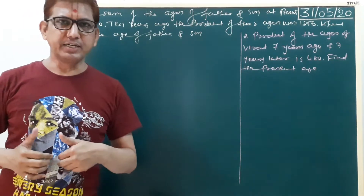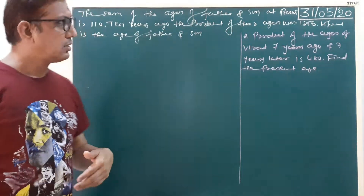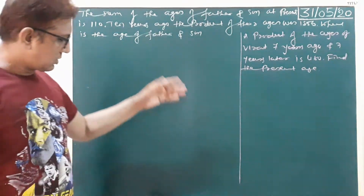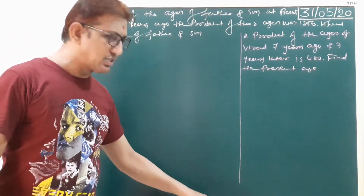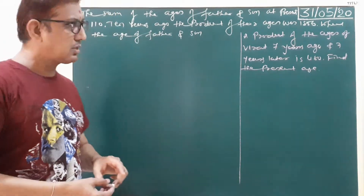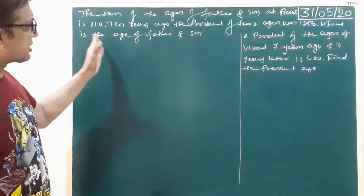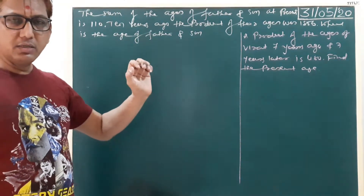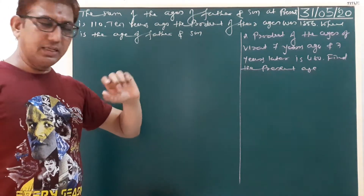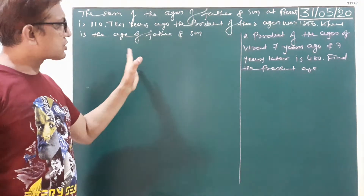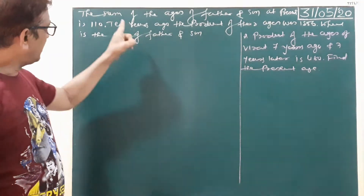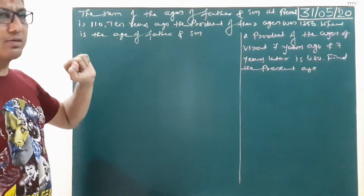Jai Saminar and friends, here we continue the quadratic equation chapter and problem sums. First method in a problem sum is completed. Now second method.